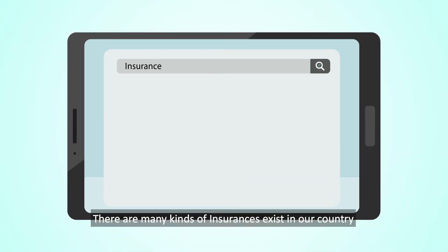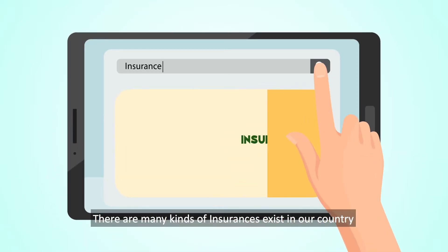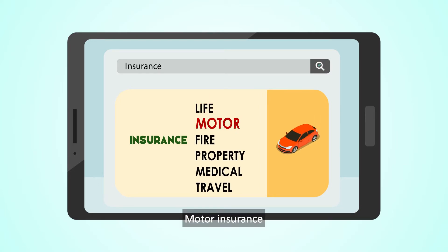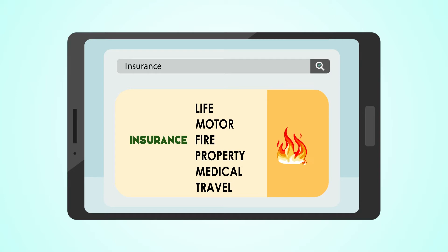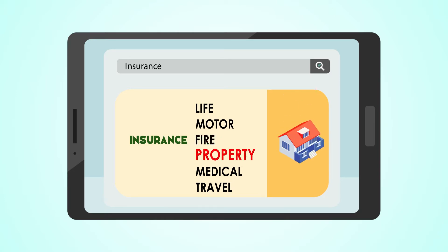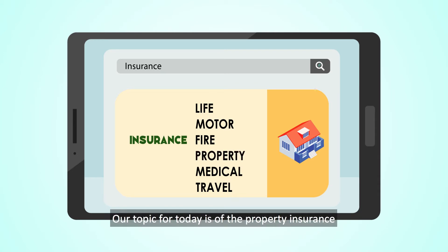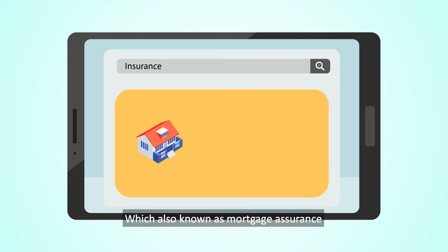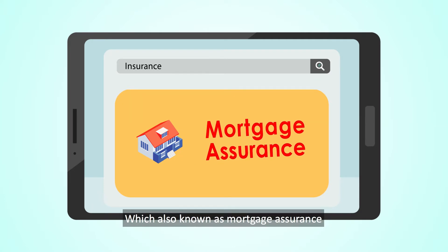There are many kinds of insurance in our country, such as life insurance, motor insurance, fire insurance, and property insurance. Our topic for today is property insurance, which is also known as mortgage insurance.